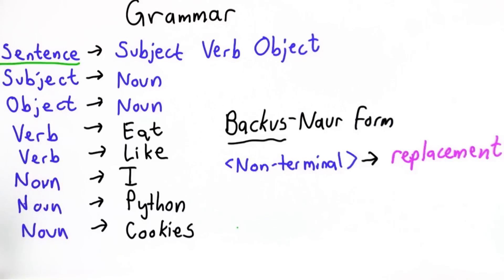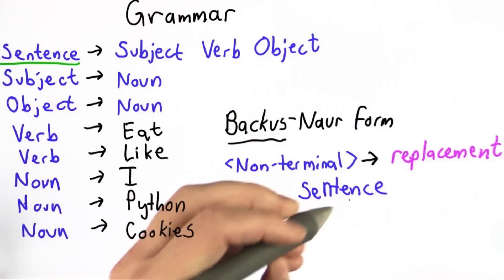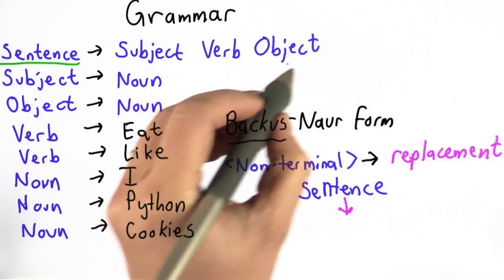So here's an example. Starting from sentence, using the grammar above, we can start with sentence. We only have one rule to choose from where sentence is on the left side. So we're going to replace sentence with subject, verb, object.